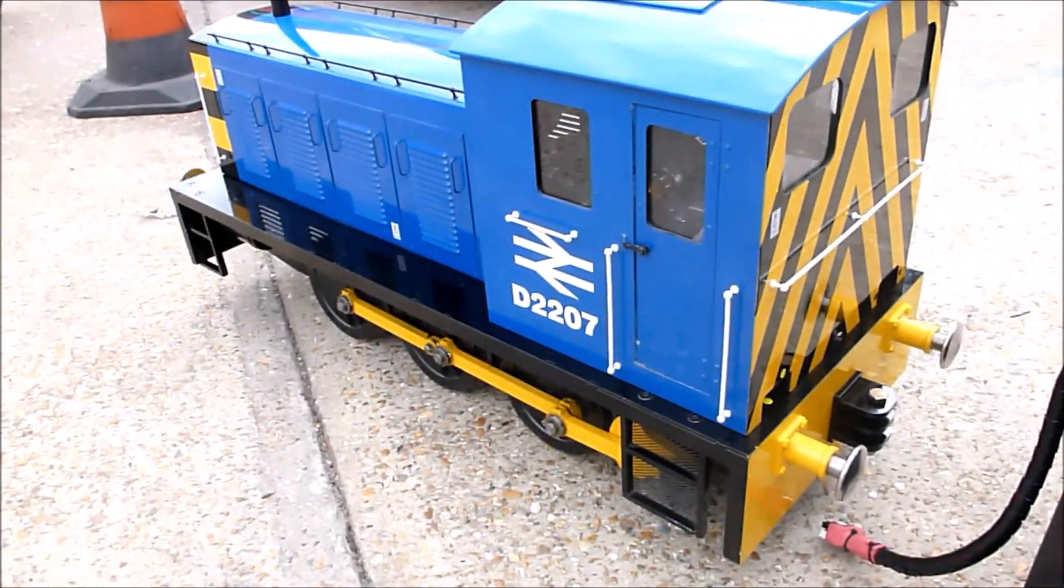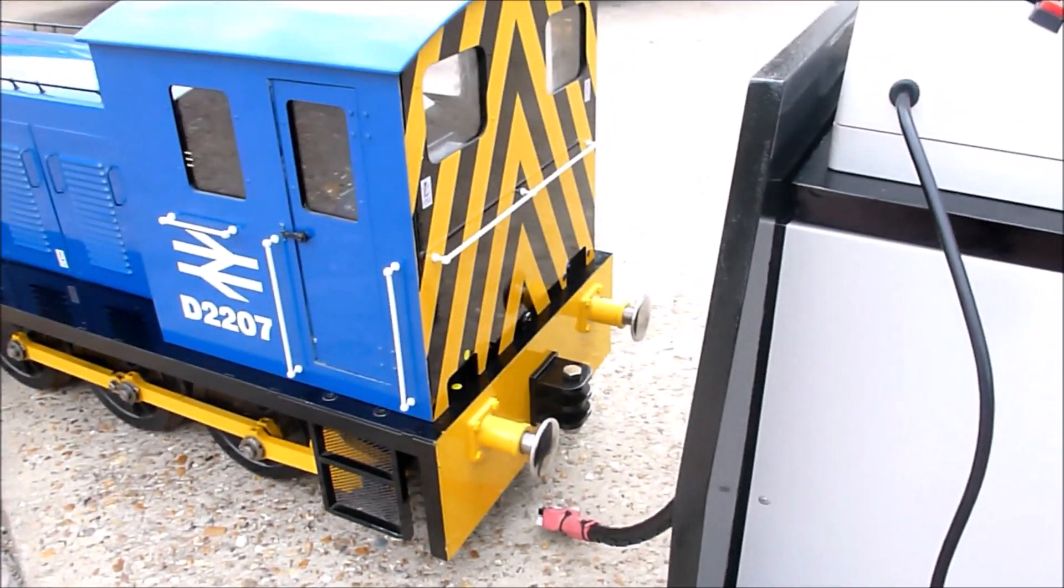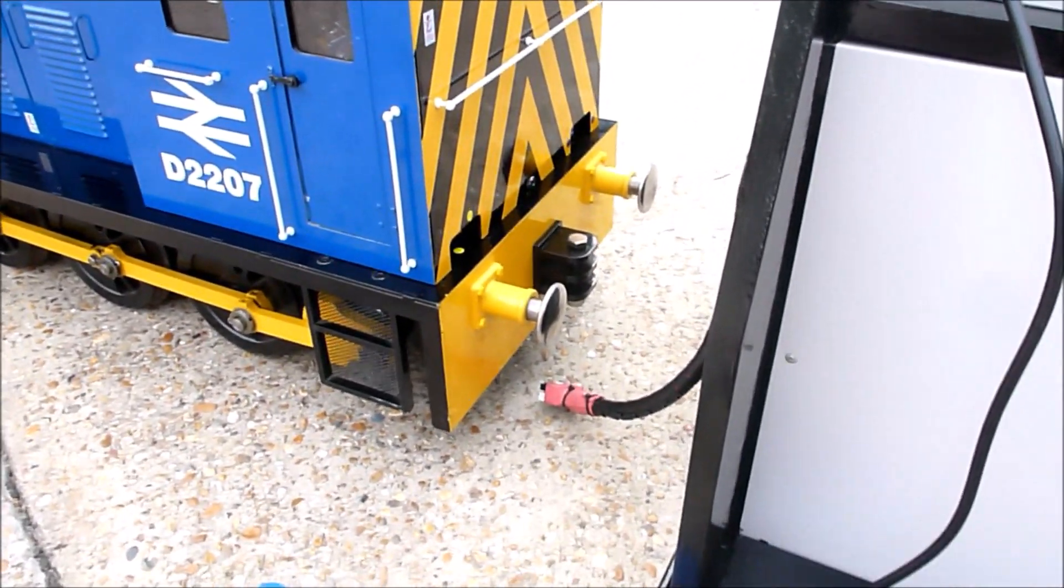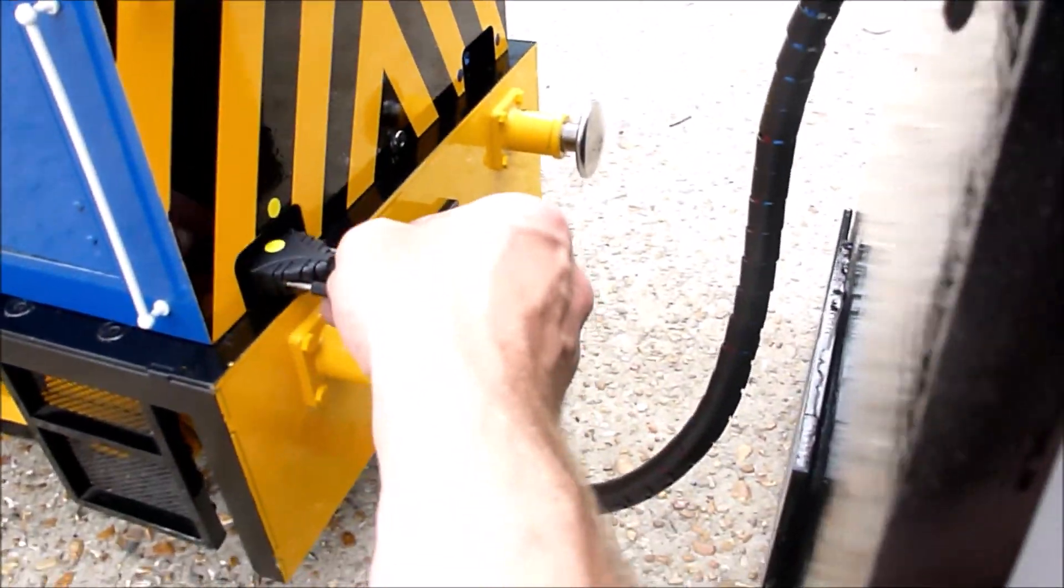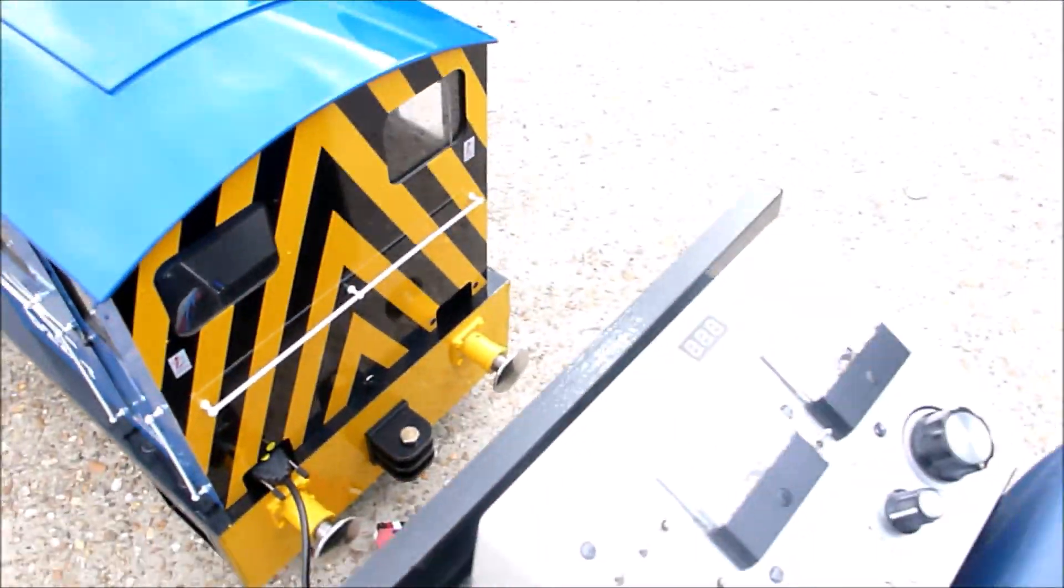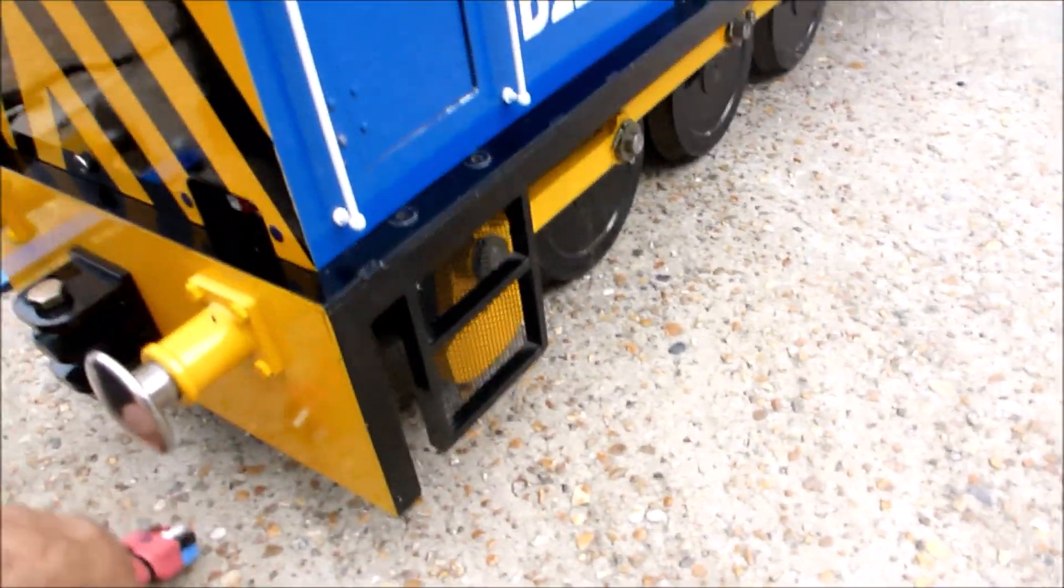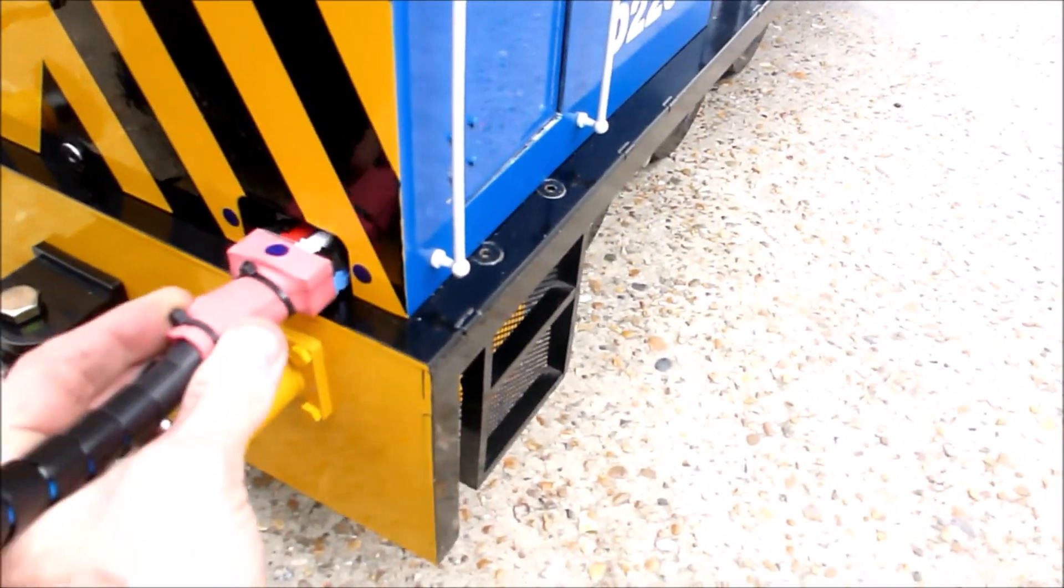So the loco is completely self-contained. It doesn't have any batteries in it, just weights. You've got two plugs that plug into the rear of it from the controller. So you have one control plug and you have a secondary master control lead.